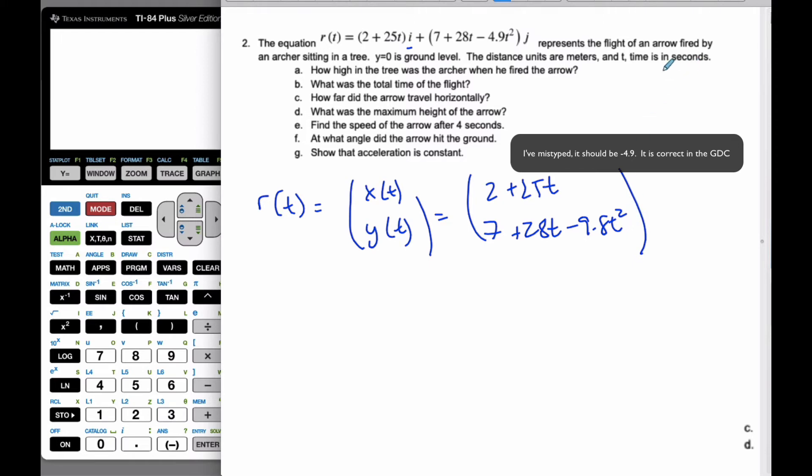Time is in seconds and distance is in meters, y = 0 is ground level. Part a asks how high in the tree was the archer when the arrow was fired? When the arrow was fired, that means time is 0. If I want how high, that means I'm looking for the y value. So I want to know y at 0. If I plug 0 into here, I can clearly see that it is 7 meters, the initial height of the archer in the tree.